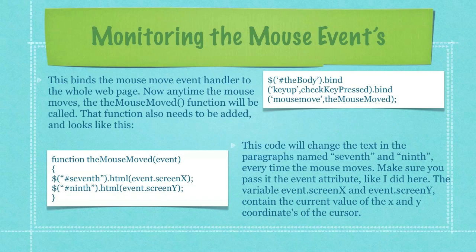In the upper right-hand corner of your screen, this text will bind the mouse move event handler to the whole web page. Now, anytime the mouse moves, the the_mouse_moved function will be called. That function also needs to be added and looks like what you see here in the lower left-hand side of your screen. This code will change the text in the paragraphs named 7th and 9th every time the mouse moves. Make sure you pass it in the event attribute like I did here. The variable event.screenX and event.screenY contain the current value of the x and y coordinates of the cursor.